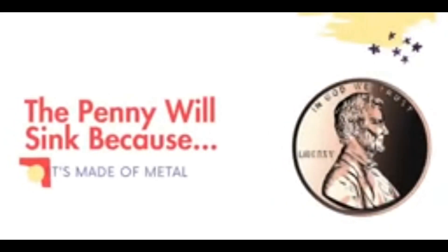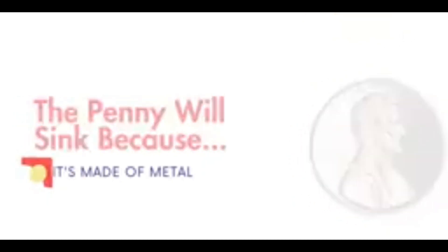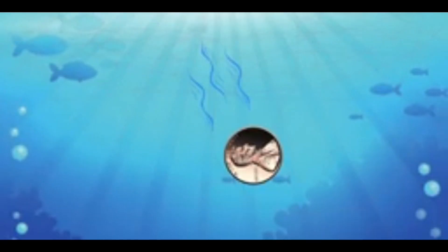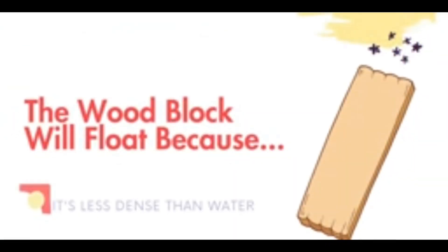An example of a very dense object is a penny. The penny will sink because the material it's made of is metal. Metal has more density than water. The molecules in metal are closer together than water molecules are.